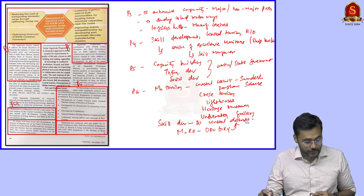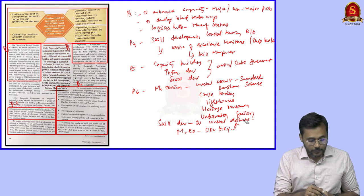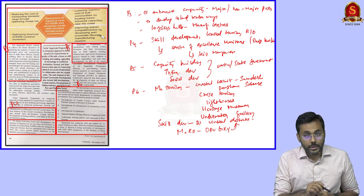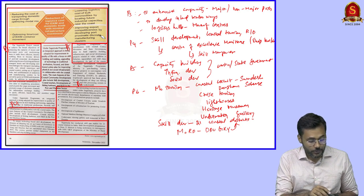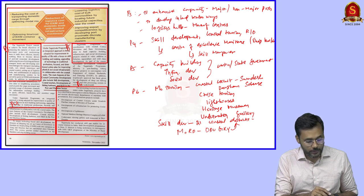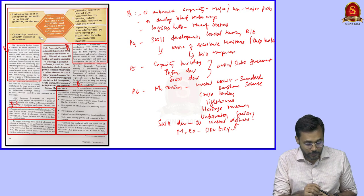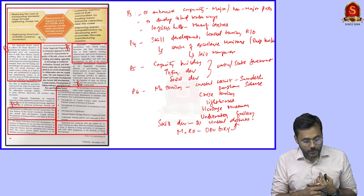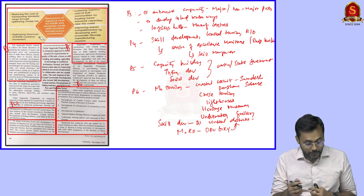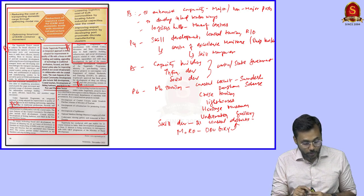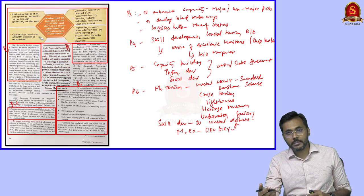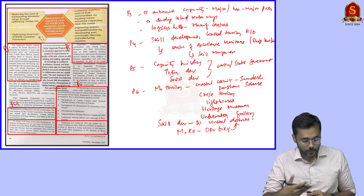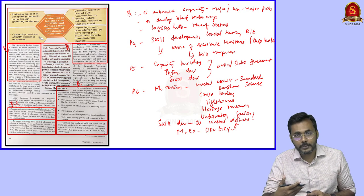These points can be used for exam answer writing especially for questions related to Sagarmala and coastal topics. There is a diagram showing the importance of Sagarmala: reducing the cost of transportation, optimizing time and cost in Exim (export-import) container movements, lowering logistics costs by putting industries close to the coast, and improving export competitiveness. When all this is done, product cost goes down and global demand for Indian products increases. These are the main objectives of Sagarmala.